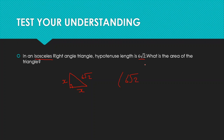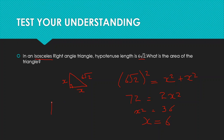So (600√2)² equals X² plus X². That gives 600² × 2 = 2X², which means 72 = 2X², so X² = 36 and X = 6. Since side lengths cannot be negative, X equals 6. So both equal sides of the triangle have length 6.